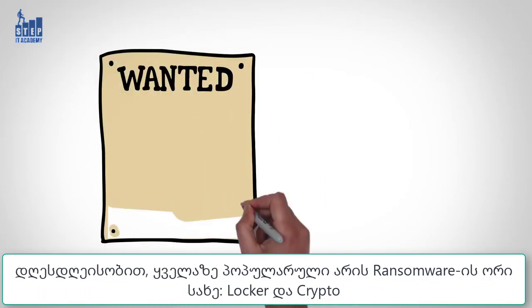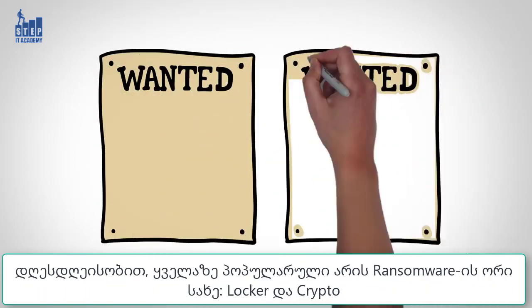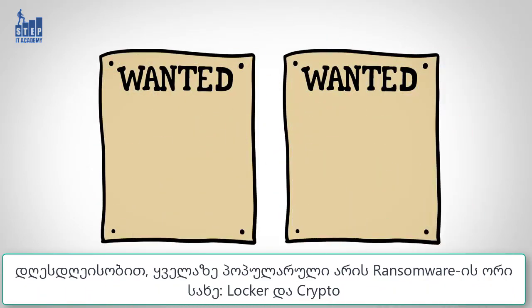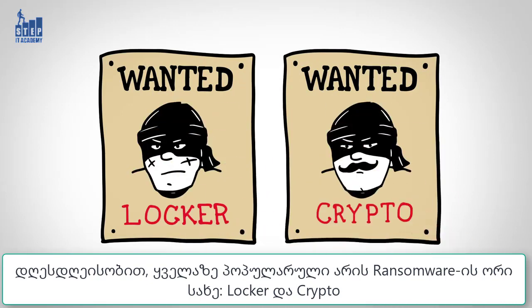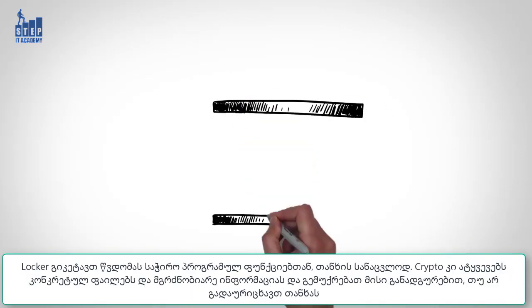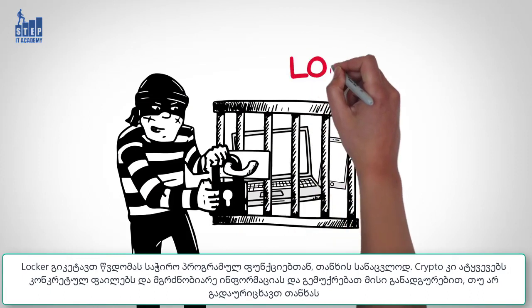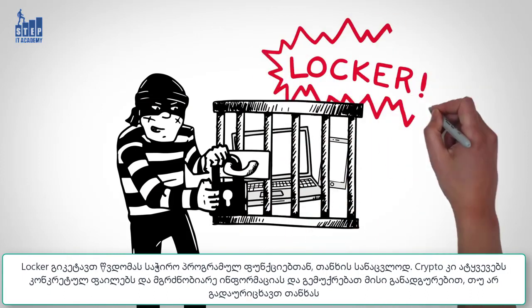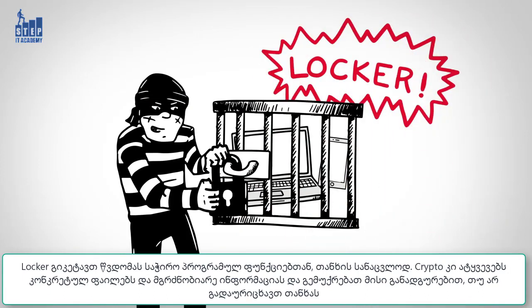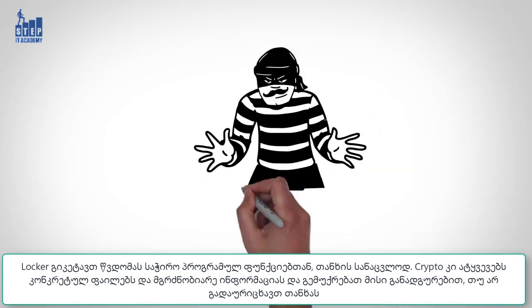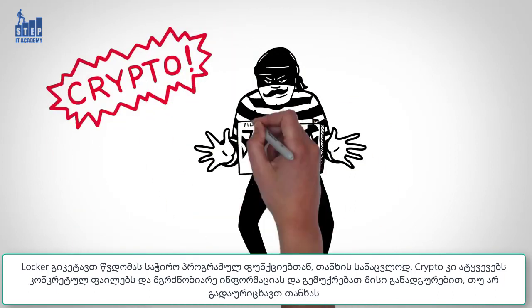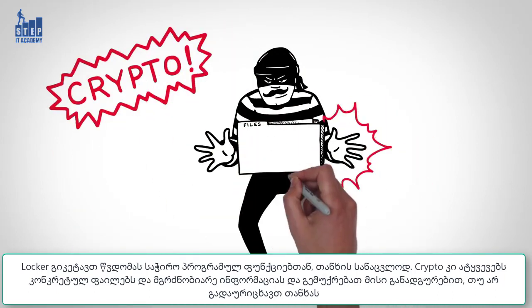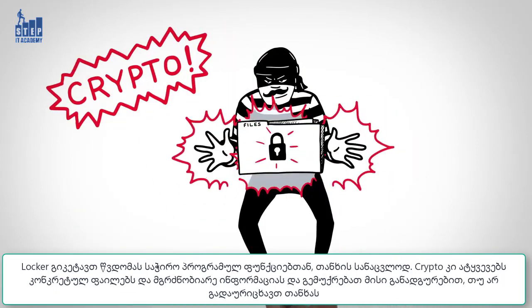Two forms of ransomware are currently the most widely used around the world: Locker and Crypto Ransomware. Locker Ransomware locks you out of basic computer functions, forcing you to pay a ransom to regain control. Crypto Ransomware, on the other hand, encrypts sensitive data like documents and important files, threatening to destroy them unless you pay a fee.